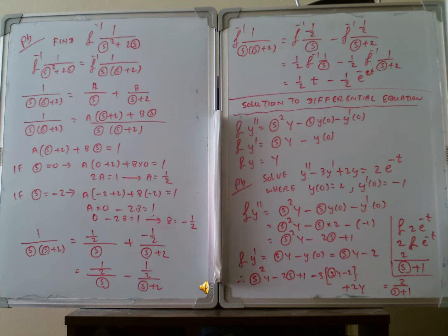So we equate the numerators: A multiplied by s plus 2, plus B multiplied by s, is equal to 1. We substitute s equal to 0 to find A, and s equal to minus 2 to find B equals minus one-half. Therefore the partial fractions are one-half divided by s, plus minus one-half divided by s plus 2. Taking the inverse Laplace: one-half multiplied by t, minus one-half multiplied by e to the minus 2t. So the final answer is one-half t minus one-half e to the minus 2t.